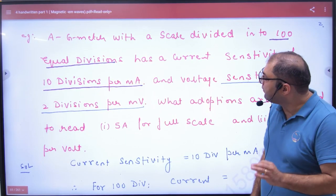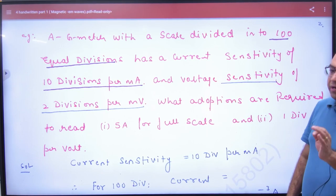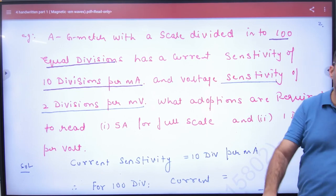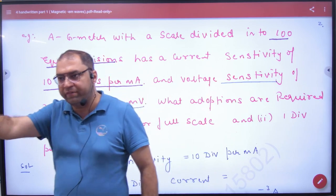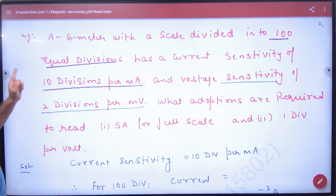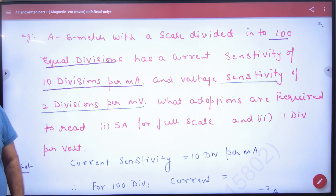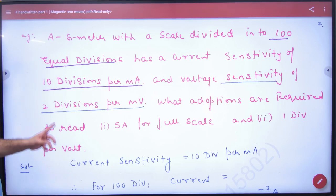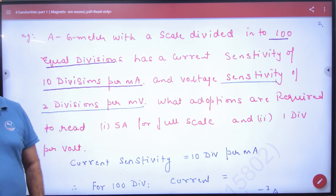Next example: a galvanometer with a scale divided into 100 equal divisions. So the meter has 100 divisions. It has a current sensitivity of 10 divisions per milliampere. And voltage sensitivity is 2 divisions per millivolt.